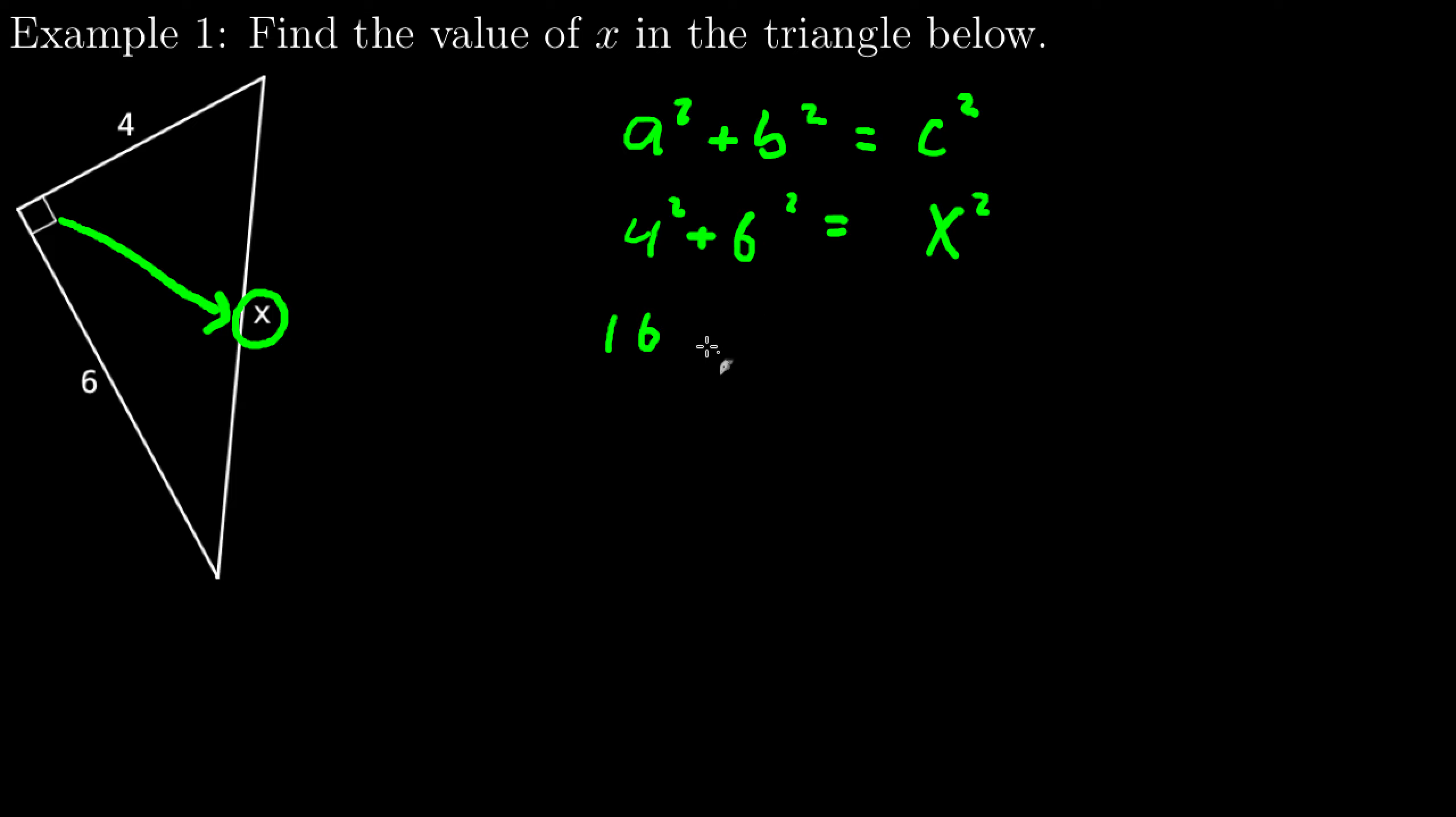4 squared is 16. 6 squared is 36. And now when I add 16 plus 36 I get something that's different than the last situation. So I will get 52. And the problem here is when I try to take the square root of both sides I don't get a nice value here. I don't have a nice integer value whose square is 52.